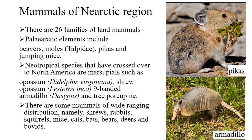Now the mammals of the Nearctic region. The Nearctic region has some animals that are also present in the Palearctic region, including the beaver, mole, pikas, and jumping mice. Some species that have crossed from the Neotropical region into North America are marsupials such as opossum, shrew opossum, nine-banded armadillo, and porcupine. The mammals of wide-ranging distribution include shrews, rabbits, squirrels, mice, cats, bears, deer, and bovids.